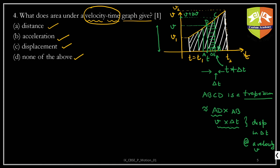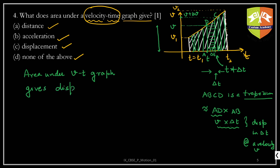This small shaded area is the displacement covered in delta t time. If you add all these small trapezium areas from t1 to t2, you get the total displacement covered. So area under the v-t graph gives displacement.